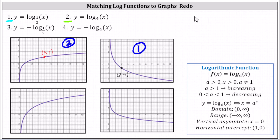Now let's look at equations three and four. Notice equation one and three are the same except equation three has a negative, and equation four is the same as equation two except for the negative. Y equals negative log base one half of x is the graph of y equals log base one half of x reflected across the x-axis. This negative changes the sign of all the y-coordinates. We already know the graph of equation one, so reflecting the point two comma negative one across the x-axis gives us the point two comma one.